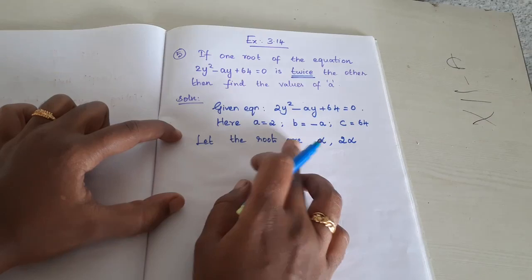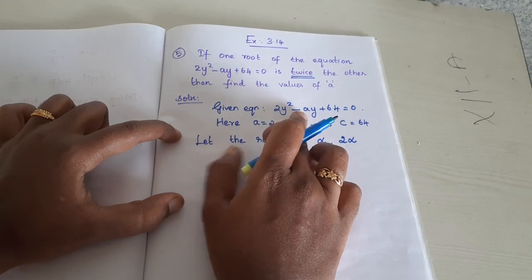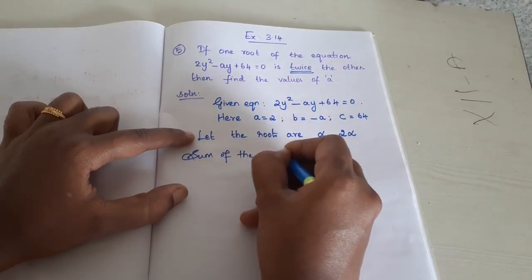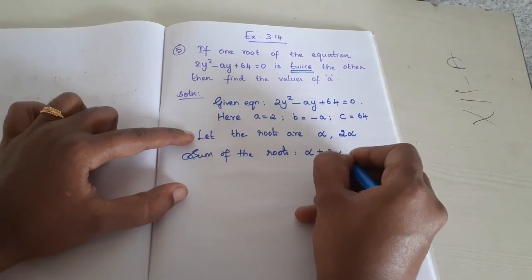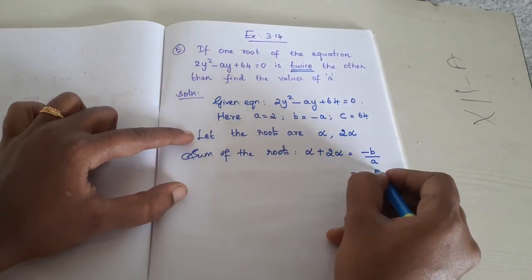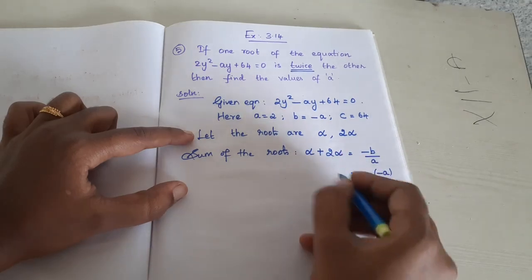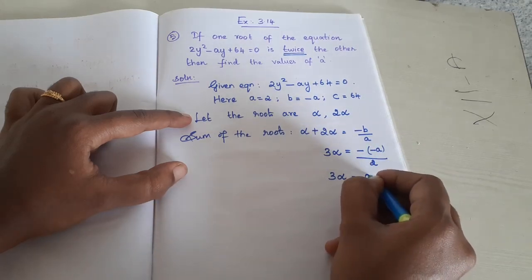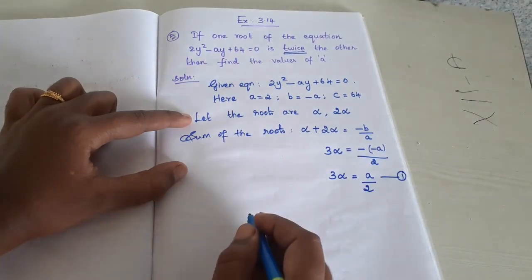We need to find the value of a — the unknown coefficient of y. First, we write the sum of roots formula: alpha plus beta equals minus b by a. Here the roots are alpha and 2 alpha, so alpha plus 2 alpha equals minus b by a, which is minus of (minus a) divided by 2. Minus and minus cancel, so 3 alpha equals a by 2. Mark this as the first equation.